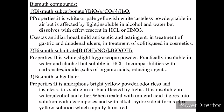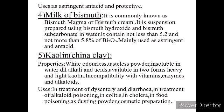Sodium bismuth subgallate is available as an amorphous, bright yellow, odorless, tasteless powder. It is stable in air but affected by light, and is insoluble in water, alcohol, and ether. When treated with mineral acid, it goes into solution which decomposes; with alkali hydroxide, it forms a clear yellow solution which rapidly turns red. It is used as an astringent, antacid, and protective.